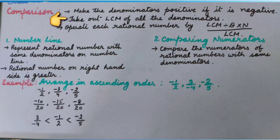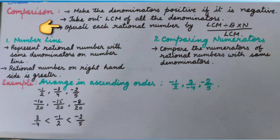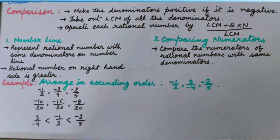Then we will take out the LCM of all the positive denominators. After that, we will operate each rational number by LCM divided by denominator, multiplied by numerator, upon LCM. After these steps, we can compare either by number line or by comparing the numerators.